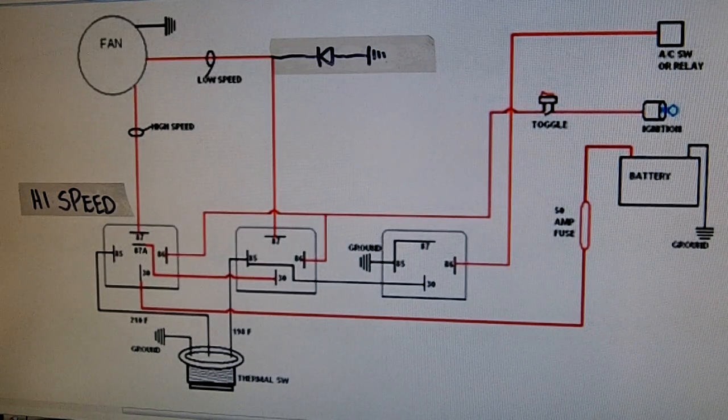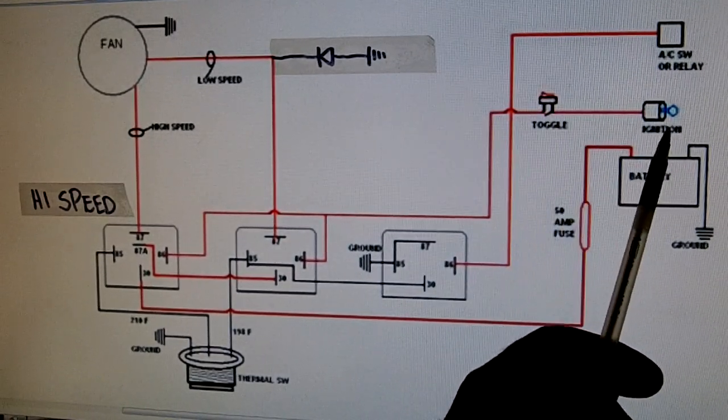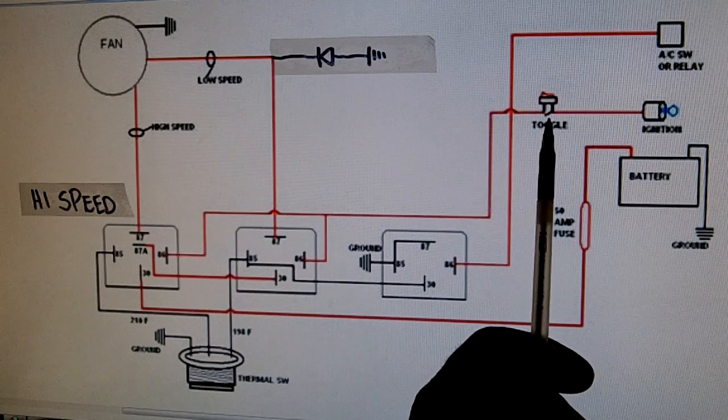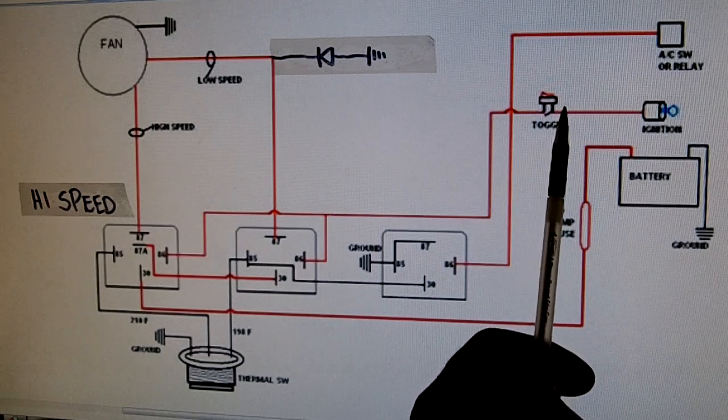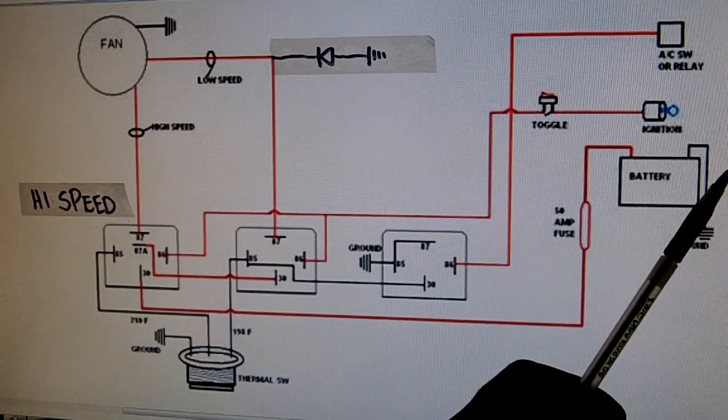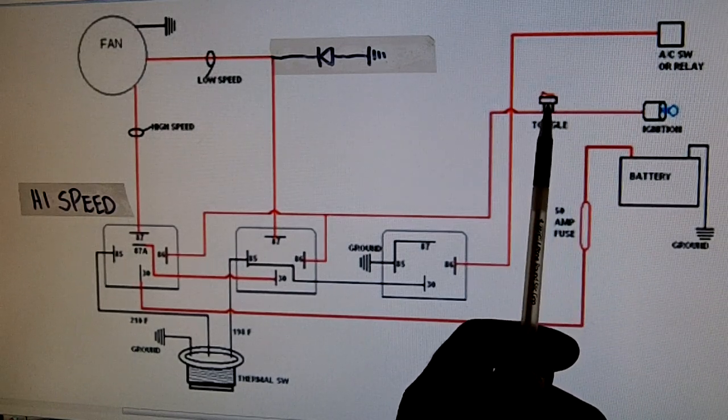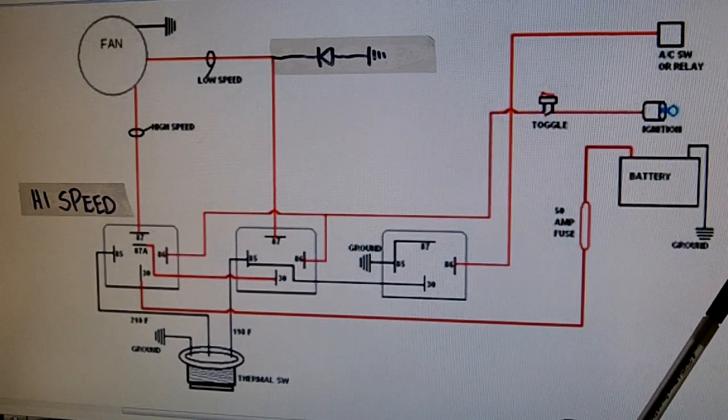And then you just need a toggle switch here off your ignition source. This is great to have when you're doing a water crossing and you want to shut the fans off completely. Get an illuminated one so that way you know it's on when you turn on your ignition. The system is on.